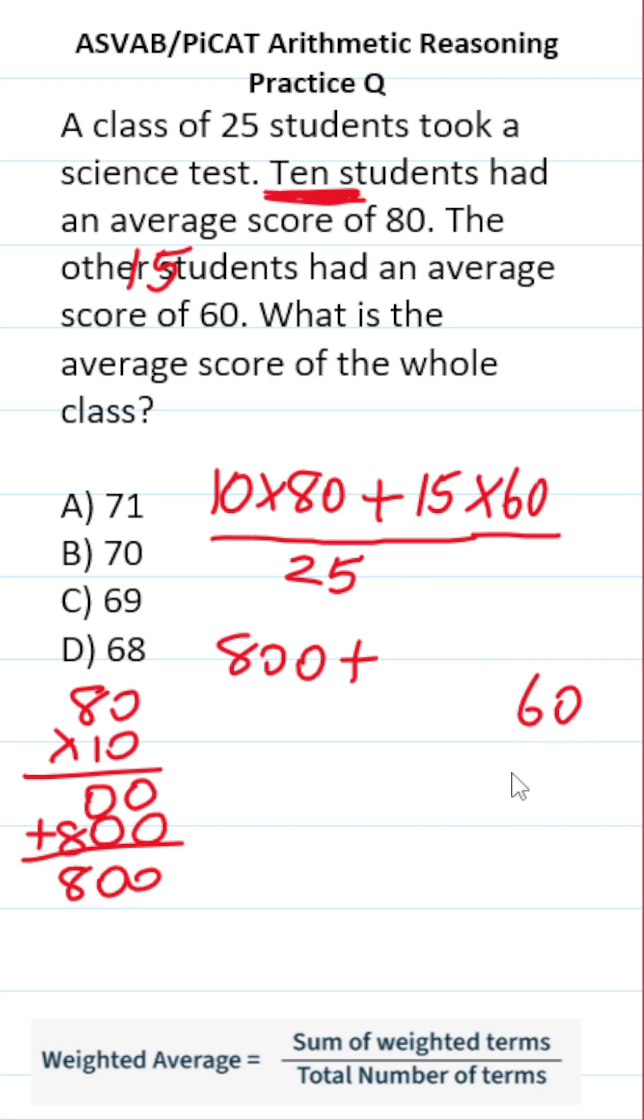So this is 800 plus, if you can't do 15 times 60 mentally, do it off to the side. We have 15 times 60. 0 times 5 is 0, 6 times 5 is 30. Add a 0 placeholder. 1 times 0 is 0, 6 times 1 is 6. This is 900.